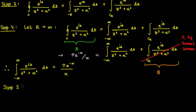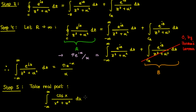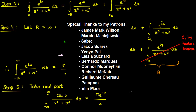The final step is to take the real part of this expression, since our original integral involved cosine. Since π·e^(−α)/α is already a real number, we conclude that the integral from negative infinity to infinity of cosine(x)/(x² + α²) dx equals π·e^(−α)/α. That should do it for this video — thank you to the patrons supporting me at the $5 level or higher, and if you enjoyed the video feel free to like and subscribe. This is the Faculty of Khan, signing out.